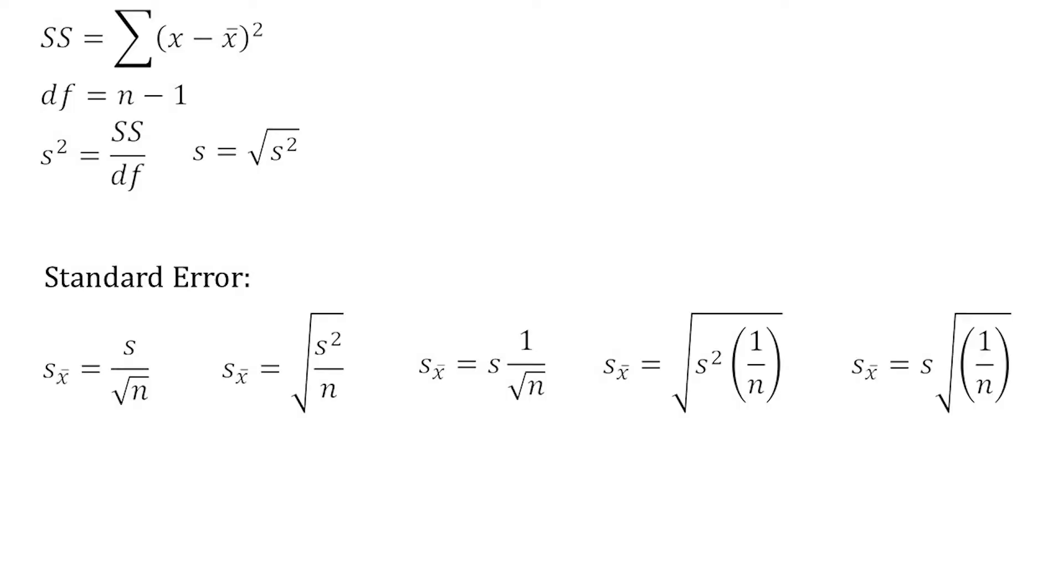Now let's look at a third way that you can make sure that the formulas you're using are as confusing as possible. What we can do is we can rearrange things mathematically. So I'm going to use this formula for the standard error as an example. As you probably remember, the standard error is simply the standard deviation divided by the square root of the sample size.